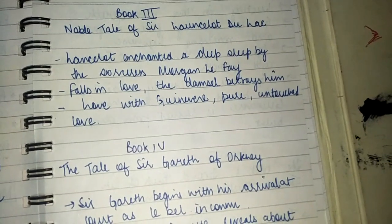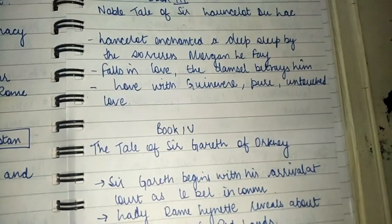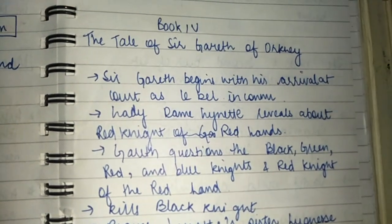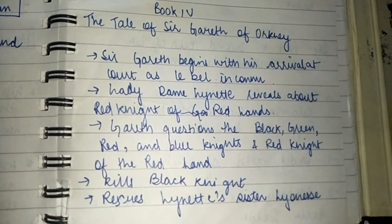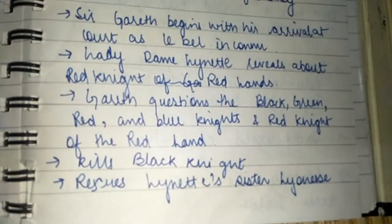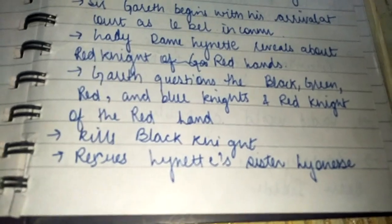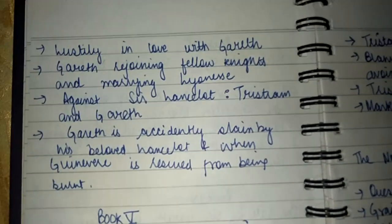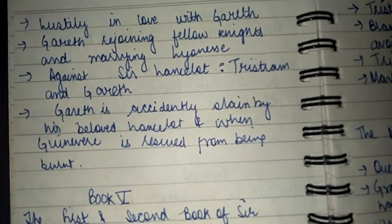Lancelot's love for Guinevere was not physical but intellectual — a love beyond physical desires. In Book 4, the Tale of Sir Gareth of Orkney, Sir Gareth arrives at court as 'La Beale Isoud.' Lady Lynette reveals information about the Red Knight of the Redlands. Gareth defeats the Black, Green, Red, and Blue Knights, kills the Black Knight, and rescues Lynette's sister Leonis. Leonis falls lustily in love with Gareth, and he ultimately marries her.